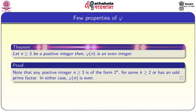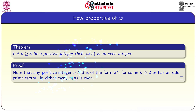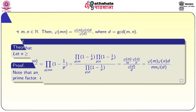Now we will see a few more properties of the Euler-Phi function. The first theorem states: let n ≥ 3 be a positive integer, then φ(n) is an even integer. Note that for any positive integer n ≥ 3, n is either of the form 2^k for some k ≥ 2 or has an odd prime factor. Hence in either case, φ(n) is even.